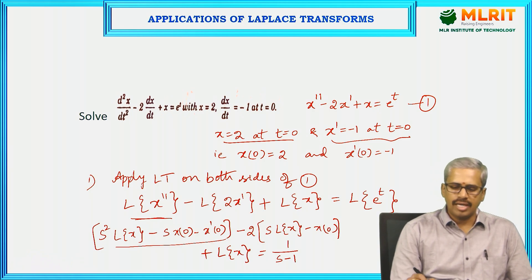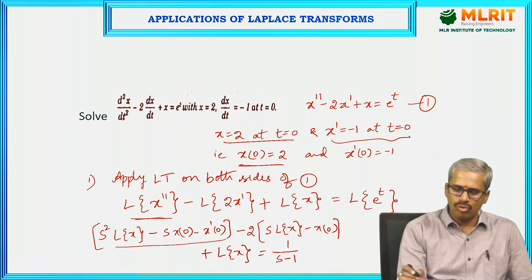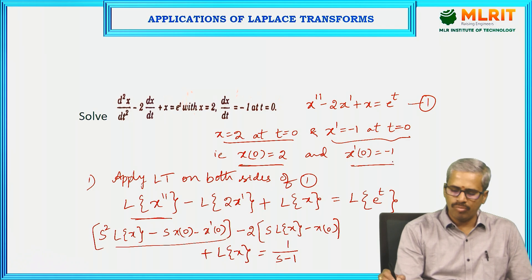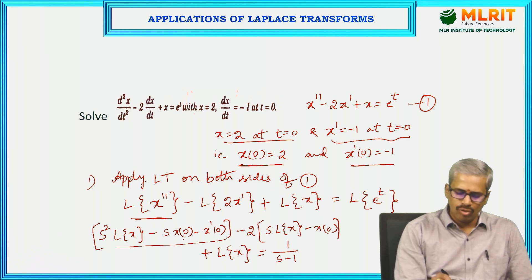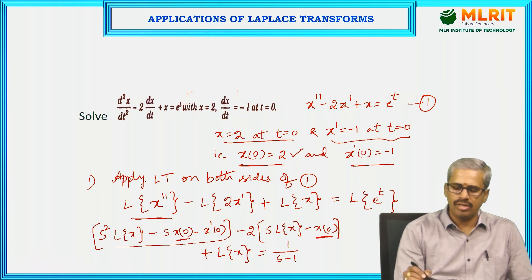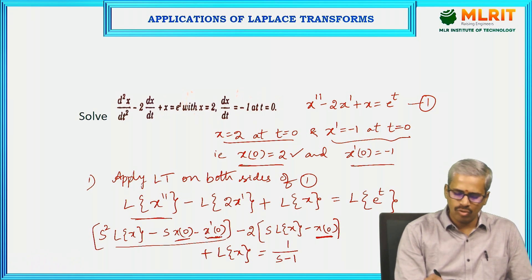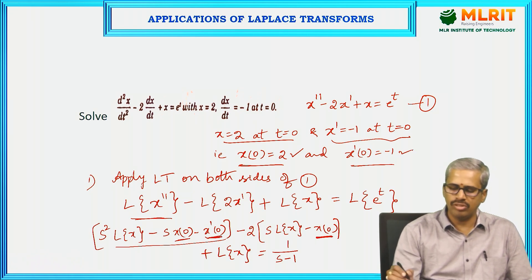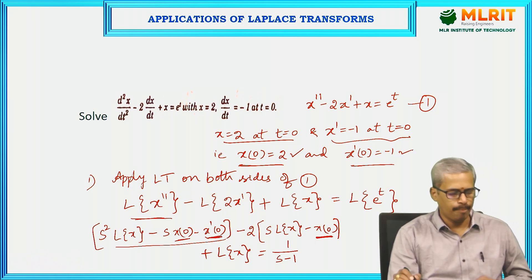Now using the conditions x(0) equals 2 and x'(0) equals minus 1, let us substitute these values. Where x(0) appears we substitute 2, and where x'(0) appears we substitute minus 1.